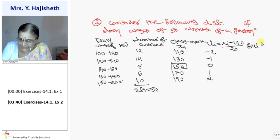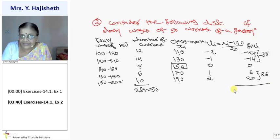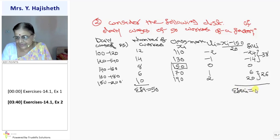Now you find out FI UI. What is FI UI? Minus 2 into 12, minus 24. Minus 14, minus 1 into 14. Then 0 multiplied by anything is 0. Then 1 into 6 is 6. 2 into 10 is 20. You add total of positive 26. Total of negative that is minus 38. So total of sigma FI UI, that is 26 plus minus 38, so minus 12.